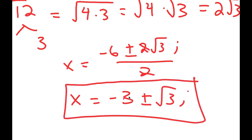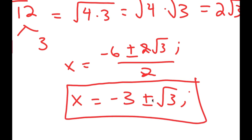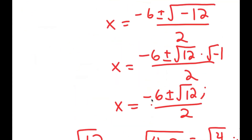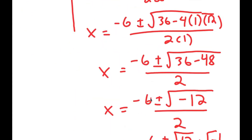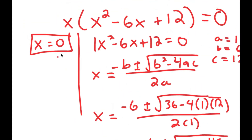So my three solutions are: x equals negative 3 plus √3 · i, x equals negative 3 minus √3 · i, and x equals 0.